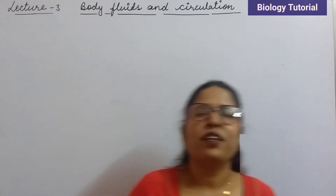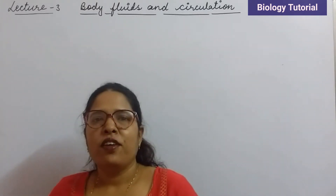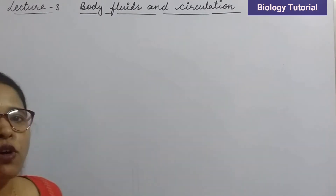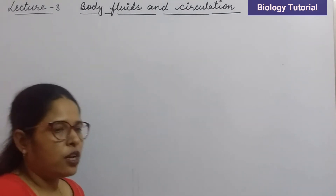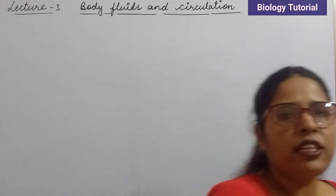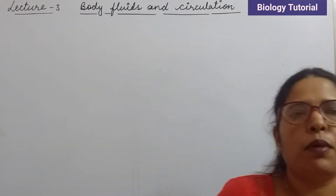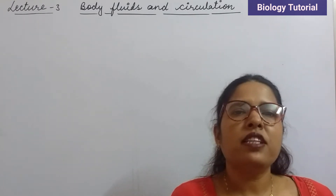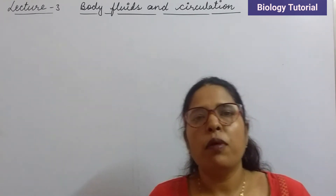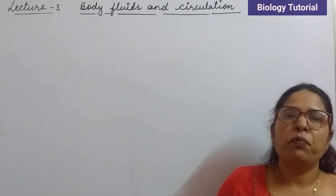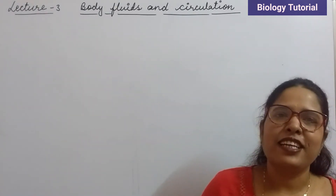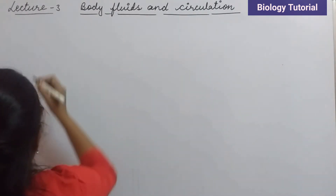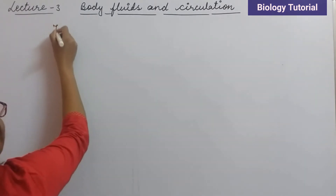Hello students, today we are going to discuss the next topic of body fluids and circulation. In this lecture we will discuss about the formed elements of blood. In our previous lecture we had talked about plasma, the liquid part of the blood, and in this section we will cover the formed elements.